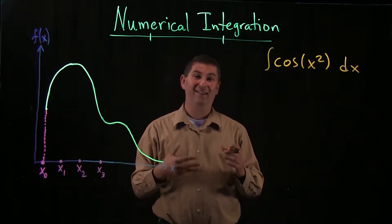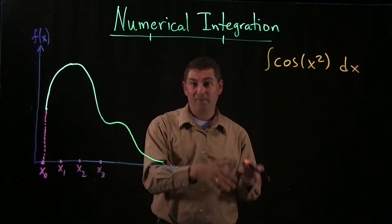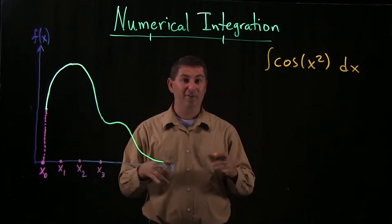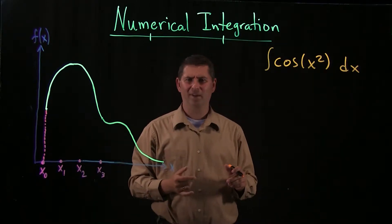Elementary antiderivative meaning essentially using the functions we know how to play with, trig functions, exponentials, log functions, polynomials. There's no combination of those whose derivative will be cosine of x squared. Really strange.